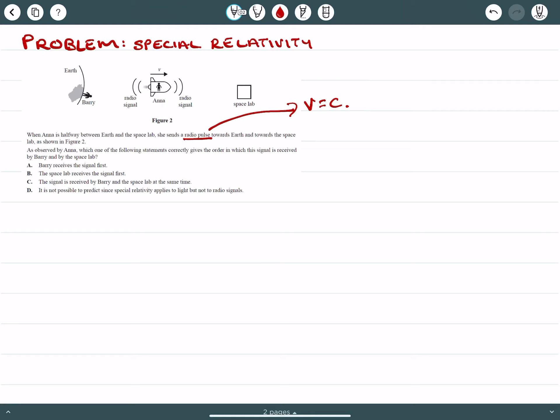And if we remember Einstein's second postulate, that means that the speed of light is like a universal speed limit. So these radio pulses, even though she has a velocity, they're moving towards their respective points at the speed of light.